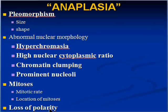Another concept in anaplasia, or malignant cellular features, is loss of polarity. For example, in many columnar-lined epithelial surfaces, the nucleus is more towards the base, or the basement membrane, or basal lamina side of the cell, and not towards the apex. In anaplastic glands, the nuclei may not stay in that general polarization area — they may go out haphazardly towards the apex as well.